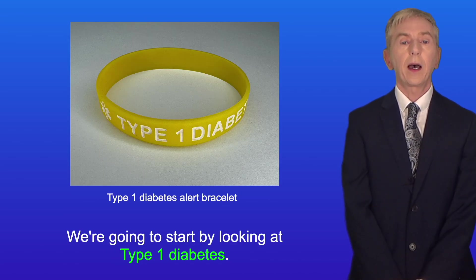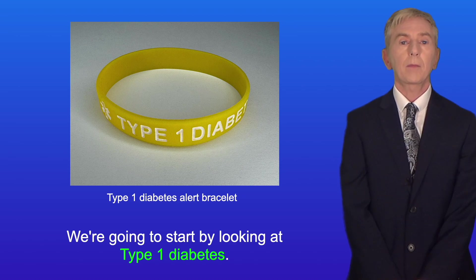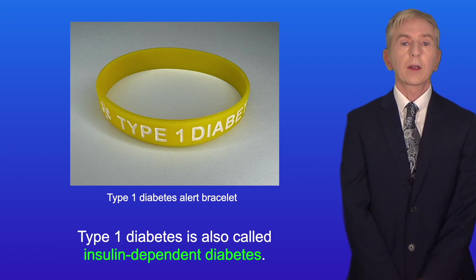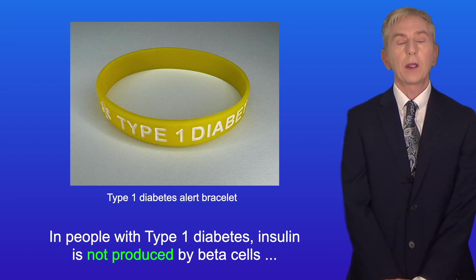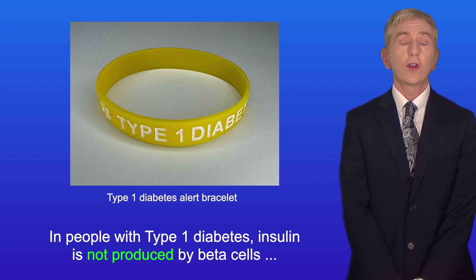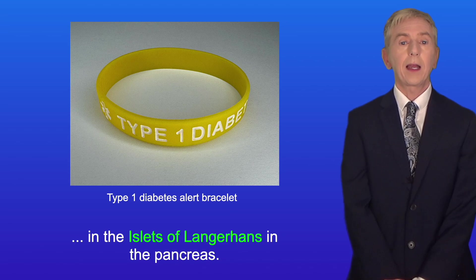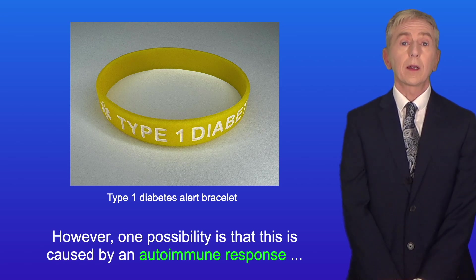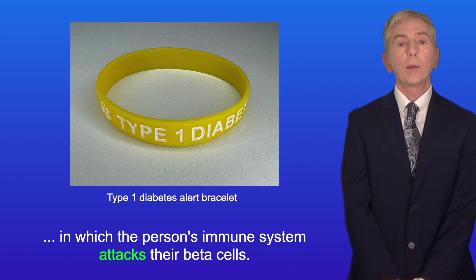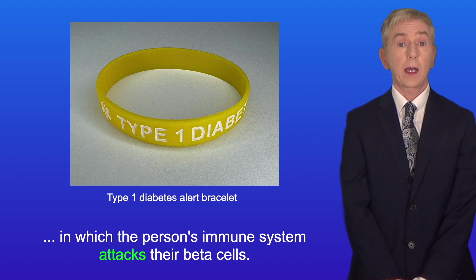Type 1 diabetes is also called insulin-dependent diabetes. In people with type 1 diabetes, insulin is not produced by beta cells in the islets of Langerhans in the pancreas. Why this happens is not well understood; however, one possibility is that this is caused by an autoimmune response in which the person's immune system attacks their beta cells.